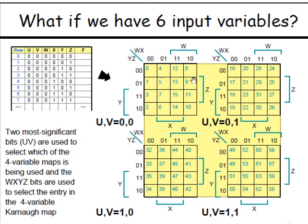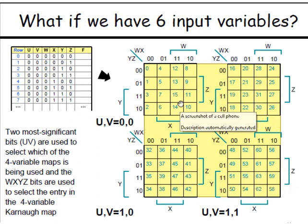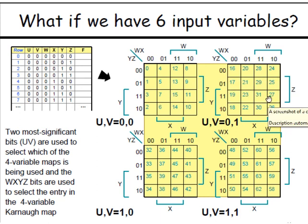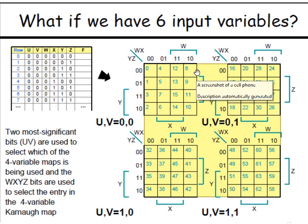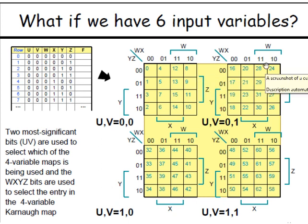Next we have a six variable K-map. A six variable K-map is made up of four four-variable K-maps. If you look at it, there is an ordering — we arrange them both vertically and horizontally, unlike how we traditionally do it in a four variable K-map. As an exercise, you should do it yourself.